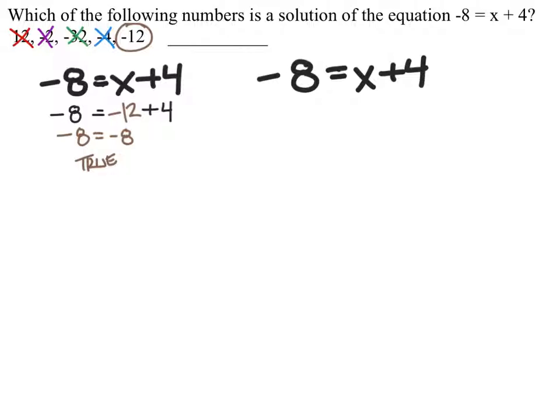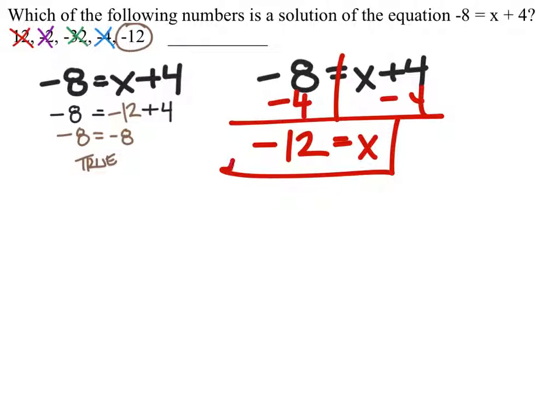Now some of you guys probably already figured this out, but yes, we could have used the inverse operation in order to solve for x instead of testing all those numbers. So when we do that, this is plus 4, so I would subtract 4 from both sides. Now we get x equals negative 12, which is what we found as well.